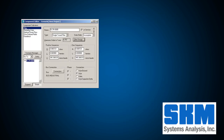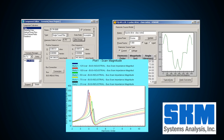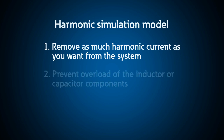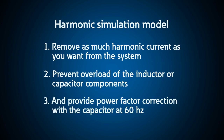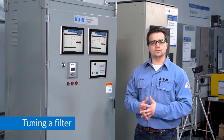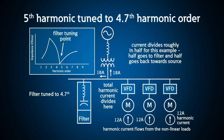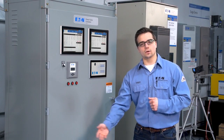Using software like SKM, you can model the filter components and determine the ratings so that you can: first, remove as much harmonic current as you want from the system; second, prevent overload of the inductor or capacitor components; and third, provide power factor correction with the capacitor at 60 Hz. When you tune a filter, you typically tune it below the frequency of interest. For example, for the 5th harmonic, we often tune a 5th harmonic filter to the 4.7th to capture maybe half of the 5th harmonic, or even the 4.2nd if we are less interested in filtering harmonics but more interested in providing reactive power or power factor compensation. When we purposely place these components in a circuit, we call this a harmonic filter.